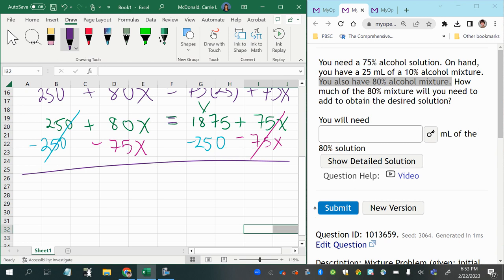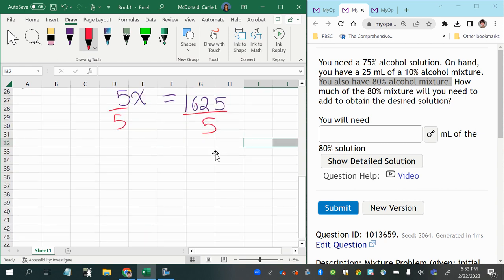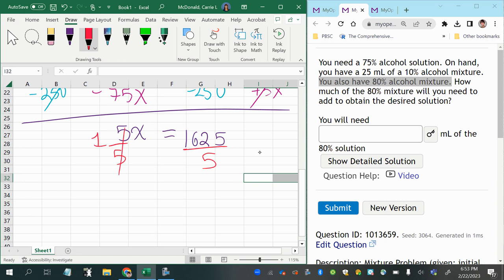80 minus 75 would give me 5x. And then what is this going to be? 1625. Now we get to divide both sides by 5 to solve for x. So that cancels to 1x on the left. And what do we get on the right?